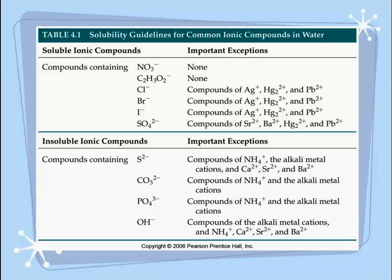Those exceptions will create insoluble compounds. If you notice the first two — nitrate and acetate ions — they have no exceptions; they will always be soluble in water. But if you look at the last four in that top box, you will see that chlorine, bromine, iodine, and sulfate are generally soluble, except if they are bonded to those specific ions listed in the right column. So if we had silver bromide, it would not be soluble in water. It's important to know the exceptions because that's going to indicate which ones are insoluble.